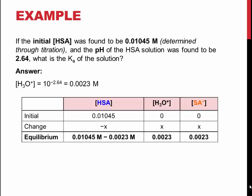10 to the power of negative 2.64 gives us a molarity of 0.0023. This is equal to the concentration of H3O and SA minus. Note that this value has only two sig figs.